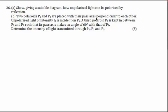Then what is happening is between these two polaroids a third polaroid P3 is kept between both of them such that its pass axis makes an angle of 60 degrees with that of P1.